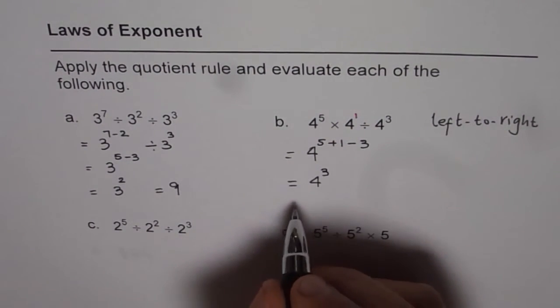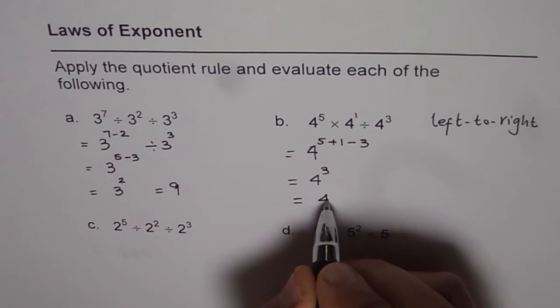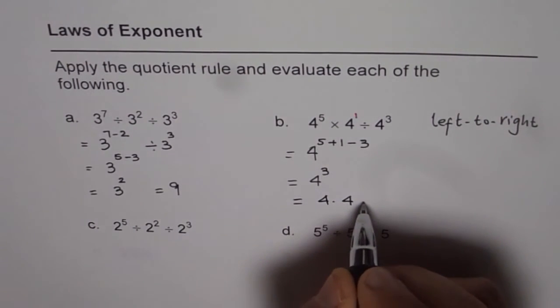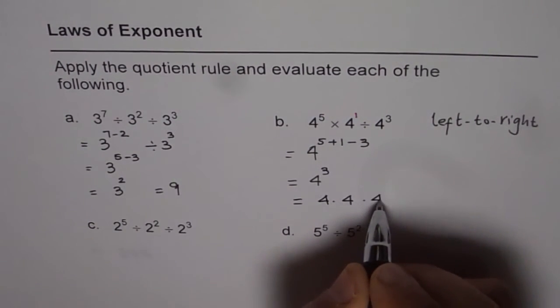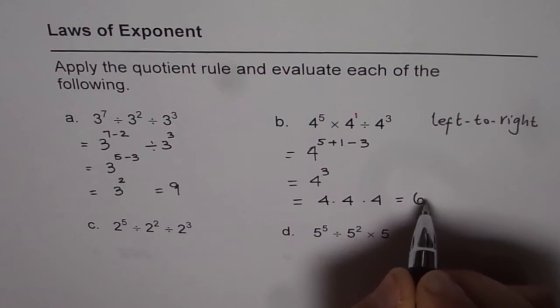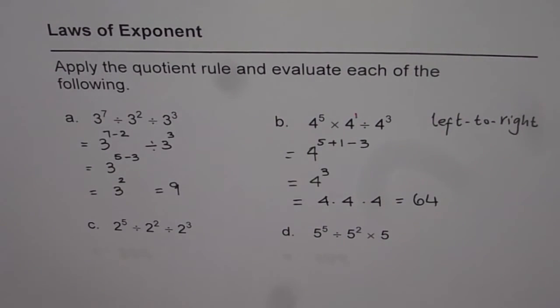4 cube. 4 cube is what? 4 times 4 is 16. And 16 times 4 is 64. So we get 64 as our answer.